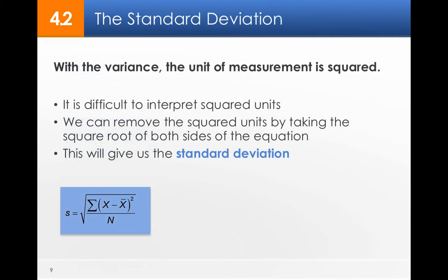With variance, the unit of measured is squared. But it can be really difficult to think about squared units and to interpret what that means. So what we do is we take the square root of that, and that gives us what we call the standard deviation. So S squared is variance, S is standard deviation. You just take the square root of the actual variance.